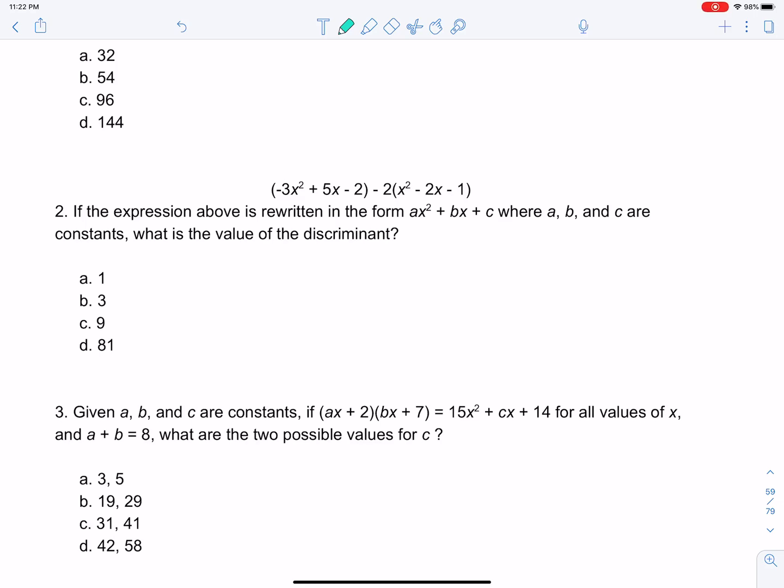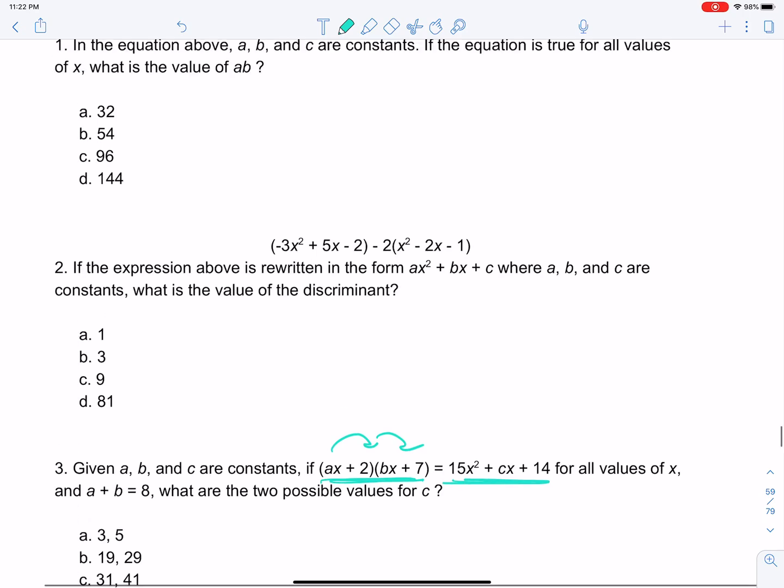So what we're building up to is this messy question here where we have 15x² + cx + 14 equals this. And I think you can tell that even just foiling this thing out gets pretty messy. But it's actually going to be super easy once we get there.